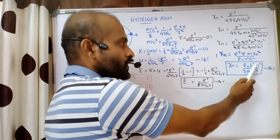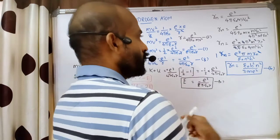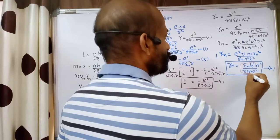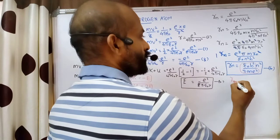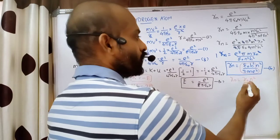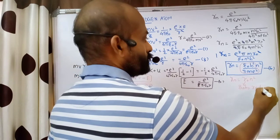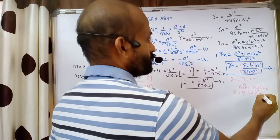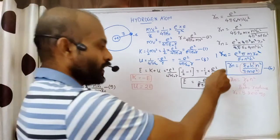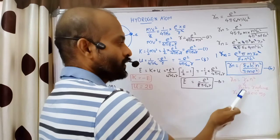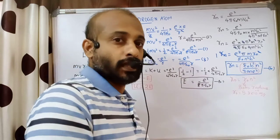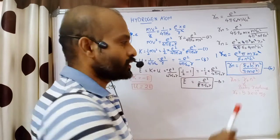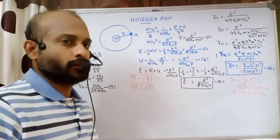In this equation, epsilon zero, h squared, pi, m, and e squared are all constants. We substitute these constants with the symbol r zero, called the Bohr radius — the radius of the first orbit. So rn equals r zero times n squared. The Bohr radius r zero has a value of 5.3 times ten to the power minus eleven meters.